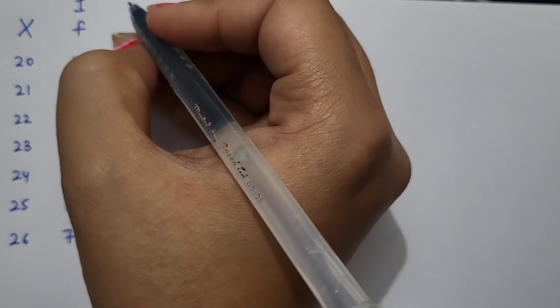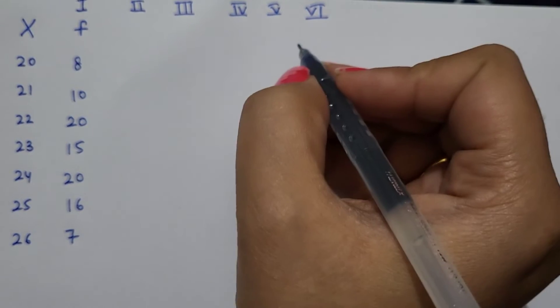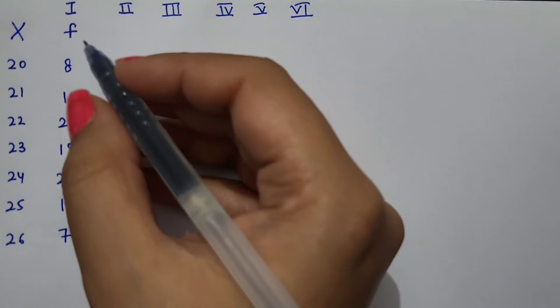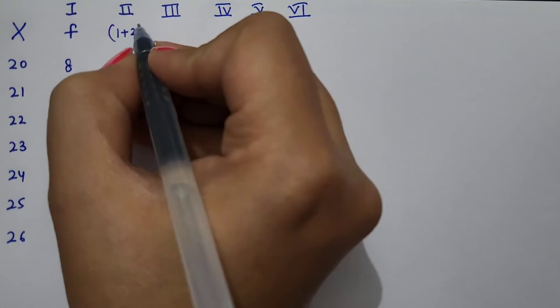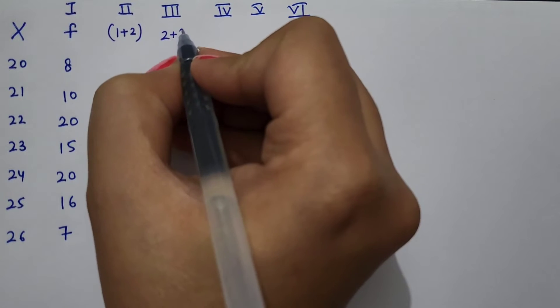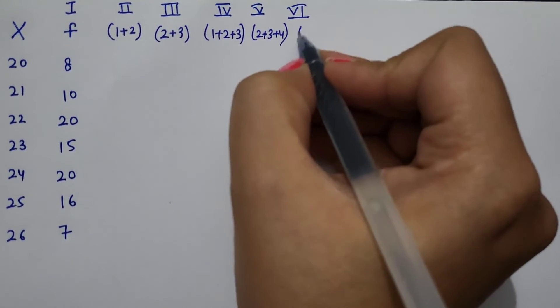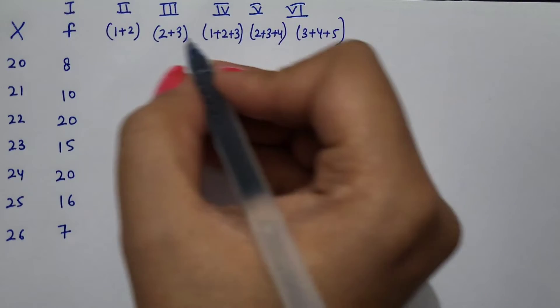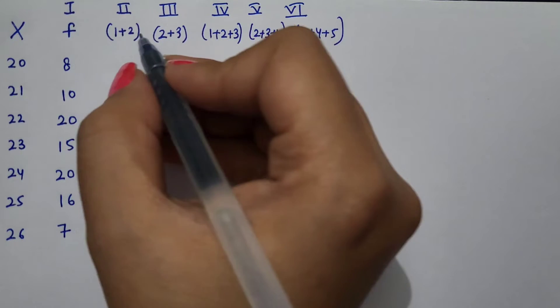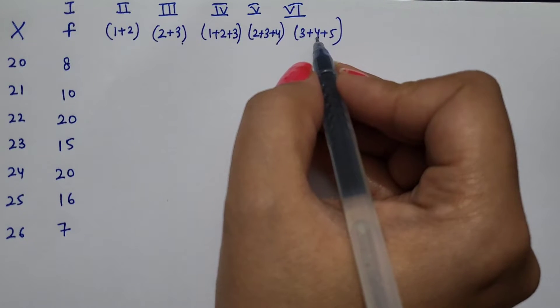We need to construct 6 columns. The methodology is: first column shows individual frequencies, second column is first plus second item, then second plus third, then first three items together, then items 2 plus 3 plus 4, and finally 3 plus 4 plus 5.